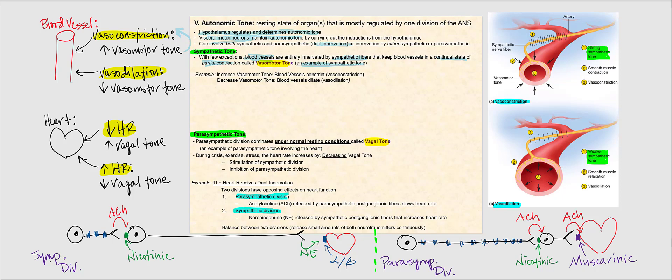If we have a decrease in vasomotor tone, then the lumen of the blood vessel will enlarge — it dilates. So our blood vessels are innervated by the sympathetic division, and during rest we have a partial state of contraction referred to as vasomotor tone.